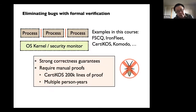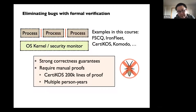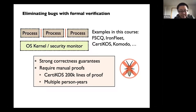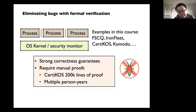For example, if you look at CertiKOS — the version we saw a few weeks ago — the OS kernel has like three or four system calls. It's a fairly small OS kernel compared to the ones we use daily. But the proof is actually over 200K lines and took multiple person-years, oftentimes a PhD or multiple PhDs to finish.